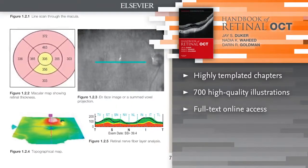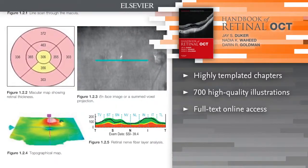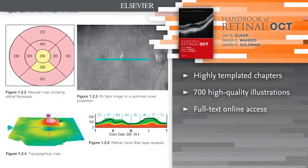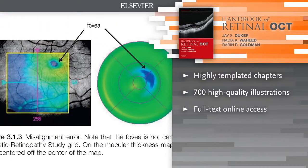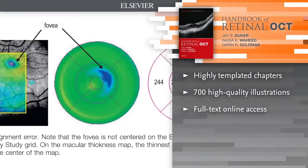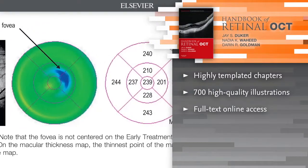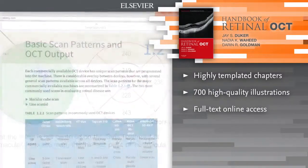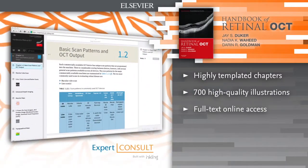See how the full spectrum of diseases present through approximately 700 illustrations, including the highest quality spectral domain OCT images available. Access the full text online at expertconsult.com.